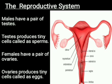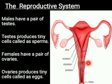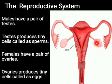Here you can see that this is a female reproductive organ. This is the ovary, and this ovary produces ovules.